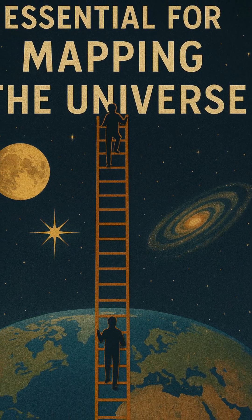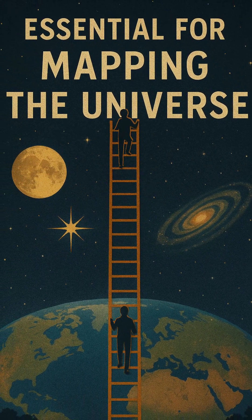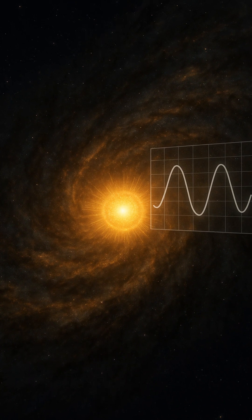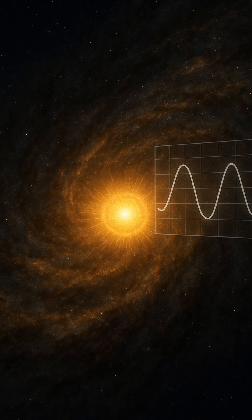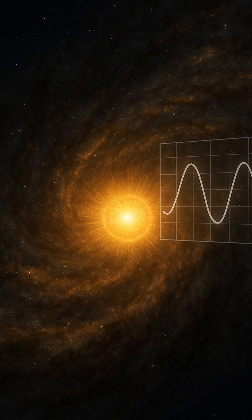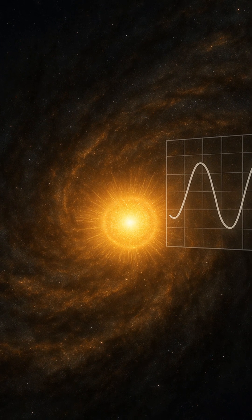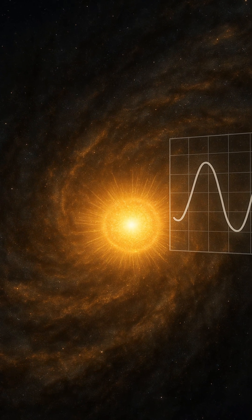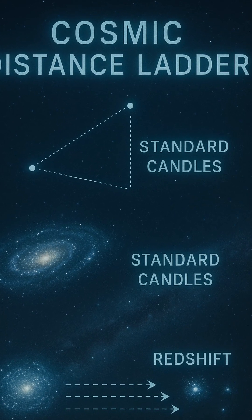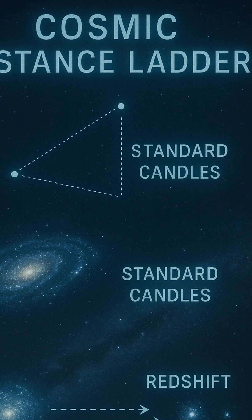And finally, the top of the ladder: redshift. As the universe expands, light from distant galaxies is stretched, shifting toward the red end of the spectrum. By measuring this redshift and comparing it to known cosmic expansion rates, astronomers can estimate how far away a galaxy lies.